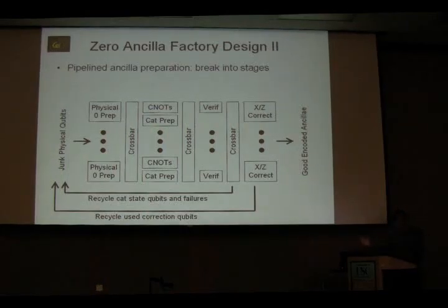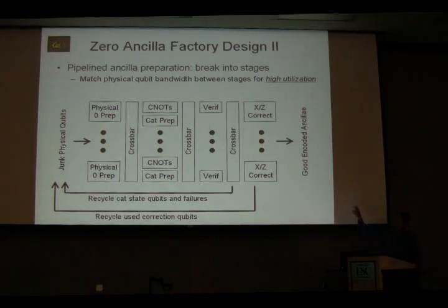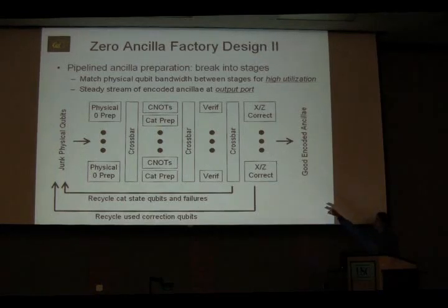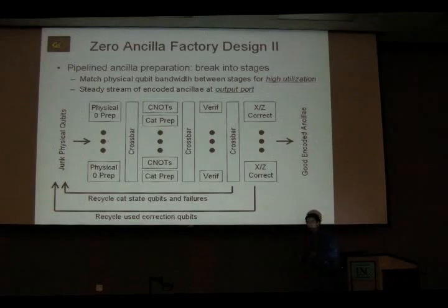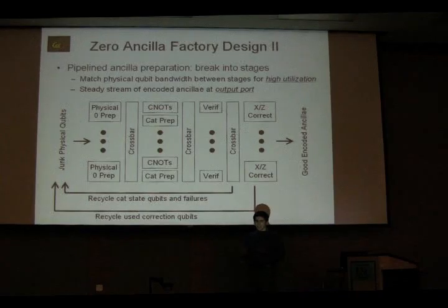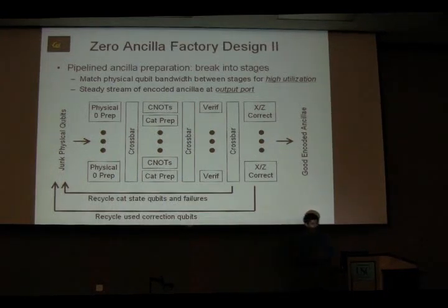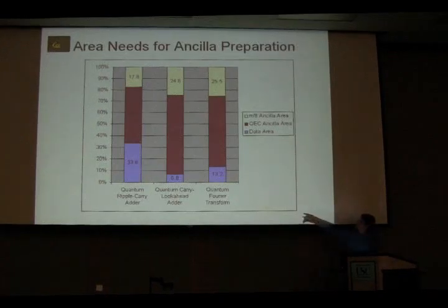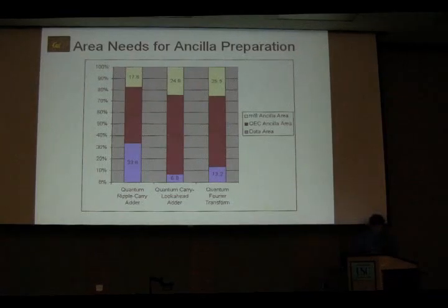The third stage is verification and the fourth stage handles bit and phase correction. Each of those boxes is a piece of hardware, actually laid out in this direction, so as a qubit physically moves through the circuit, it is physically moving across the layout. We bandwidth-match adjacent stages so the pipeline stays completely full — high utilization. Because this is a physical layout, we have input and output ports: all inputs come in on one side and outputs emerge in one relatively concentrated area, which we place close to the data. We also designed a pi-over-8 ancilla factory for non-transversal gates, which is larger and more complex but follows the same ideas.